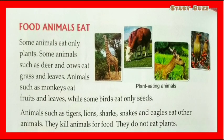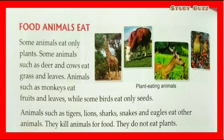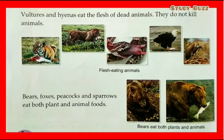Animals eat different foods. Some animals eat only plants — animals such as deer and cows eat grass and leaves, monkeys eat fruits and leaves, while some birds eat only seeds. Animals such as tigers, lions, sharks, snakes, and eagles eat other animals. They kill animals for food and do not eat plants. Vultures and hyenas eat the flesh of dead animals; they do not kill animals.